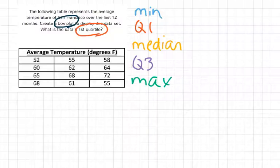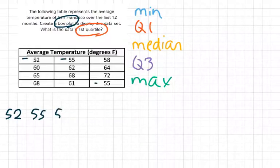In order to find these five values, the first step we're going to do is to order all of these values from least to greatest. So my lowest value that I have is 52, so let's start putting these in order. Next lowest value is 55, and I have another 55.